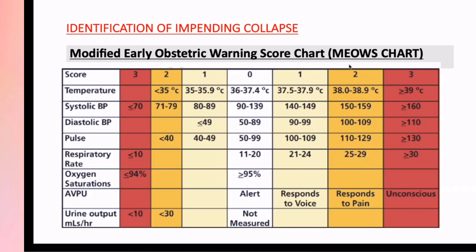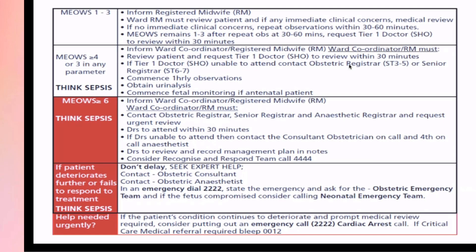Based on the score, they ask you what will you do next. This is how questions have been asked in both Part 2 and Part 3, so this is important. If based on your clinical scenario the score is between one and three, you will just inform the registered midwife, because the score is low.